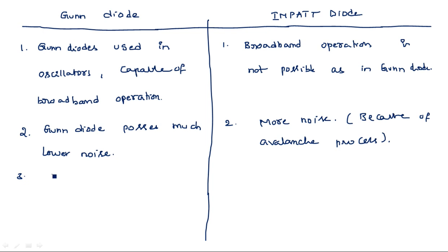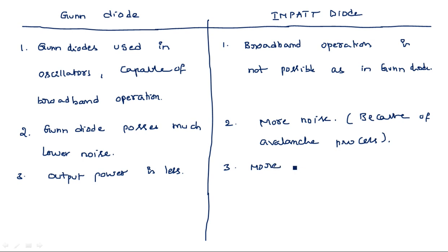Third difference: Output power is less for the Gunn diode. Whereas for the IMPATT diode, more power output is obtained.